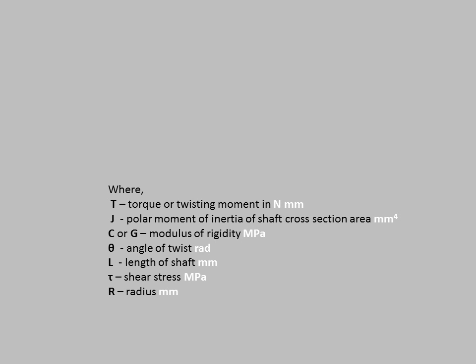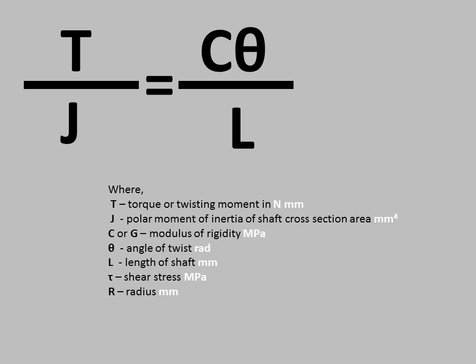Torsion equation is T by J equal to C theta by L equal to tau by R, where T is torque or twisting moment, J is polar moment of inertia, C or G is the modulus of rigidity, theta is angle of twist, L is length of shaft, tau is shear stress, R is radius.